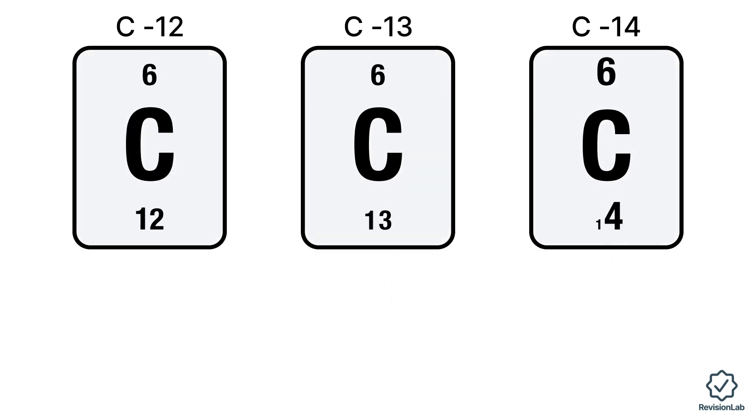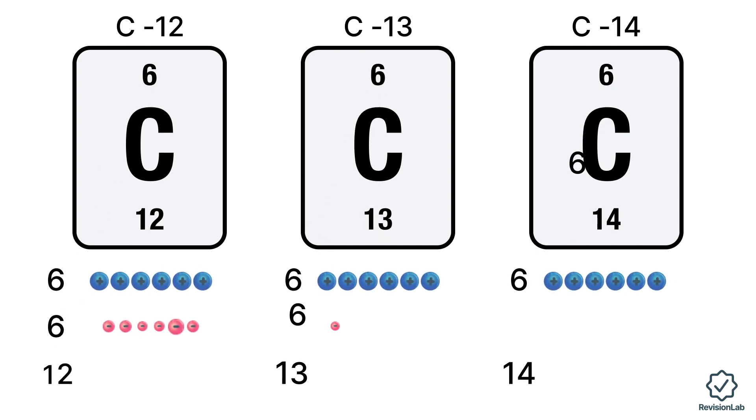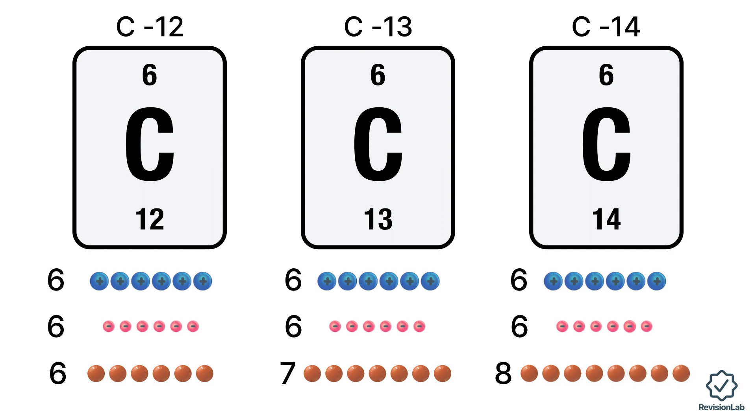We have already seen that isotopes of elements have the same number of protons since they're the same element and the same number of electrons, but they have different numbers of neutrons in their nucleus.